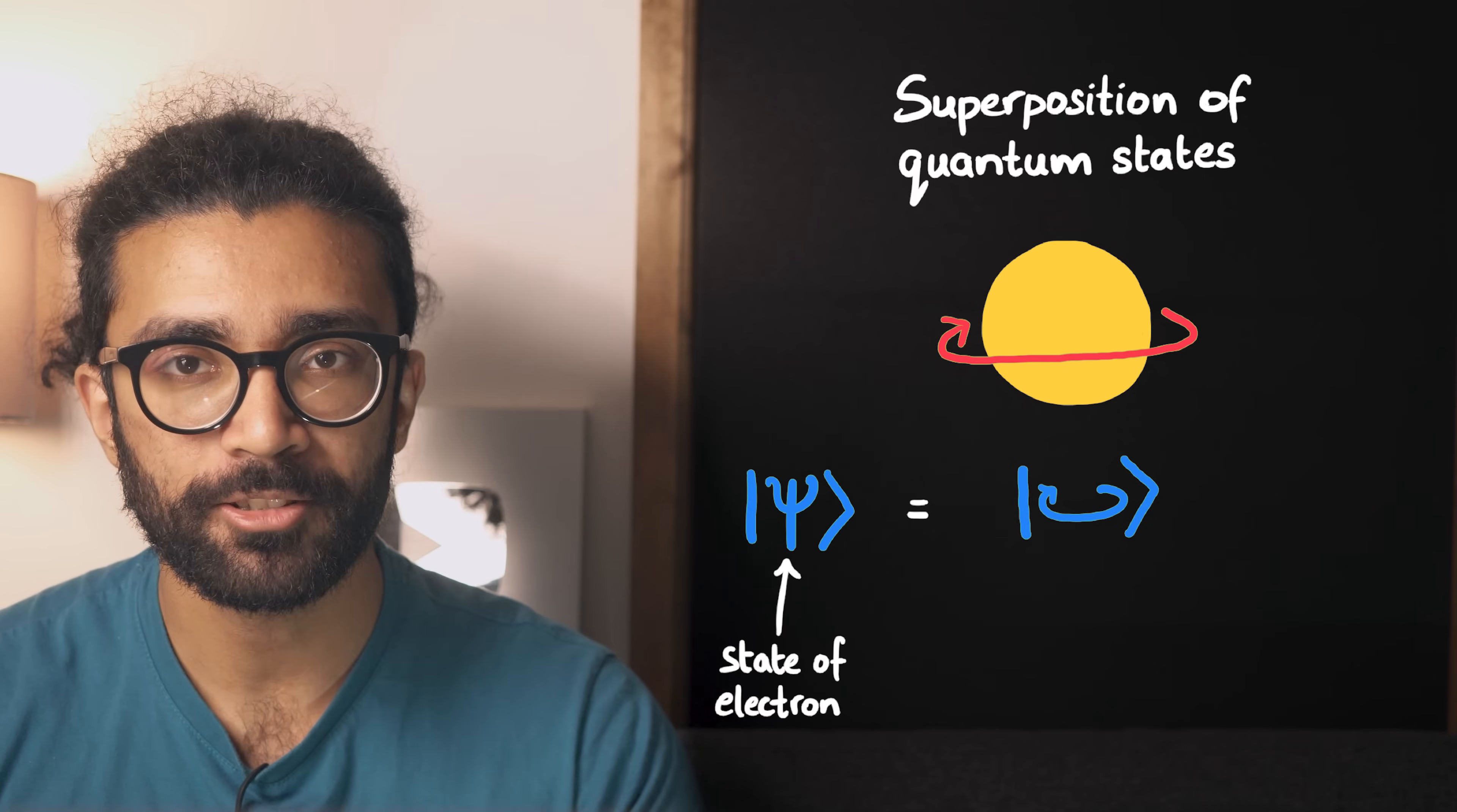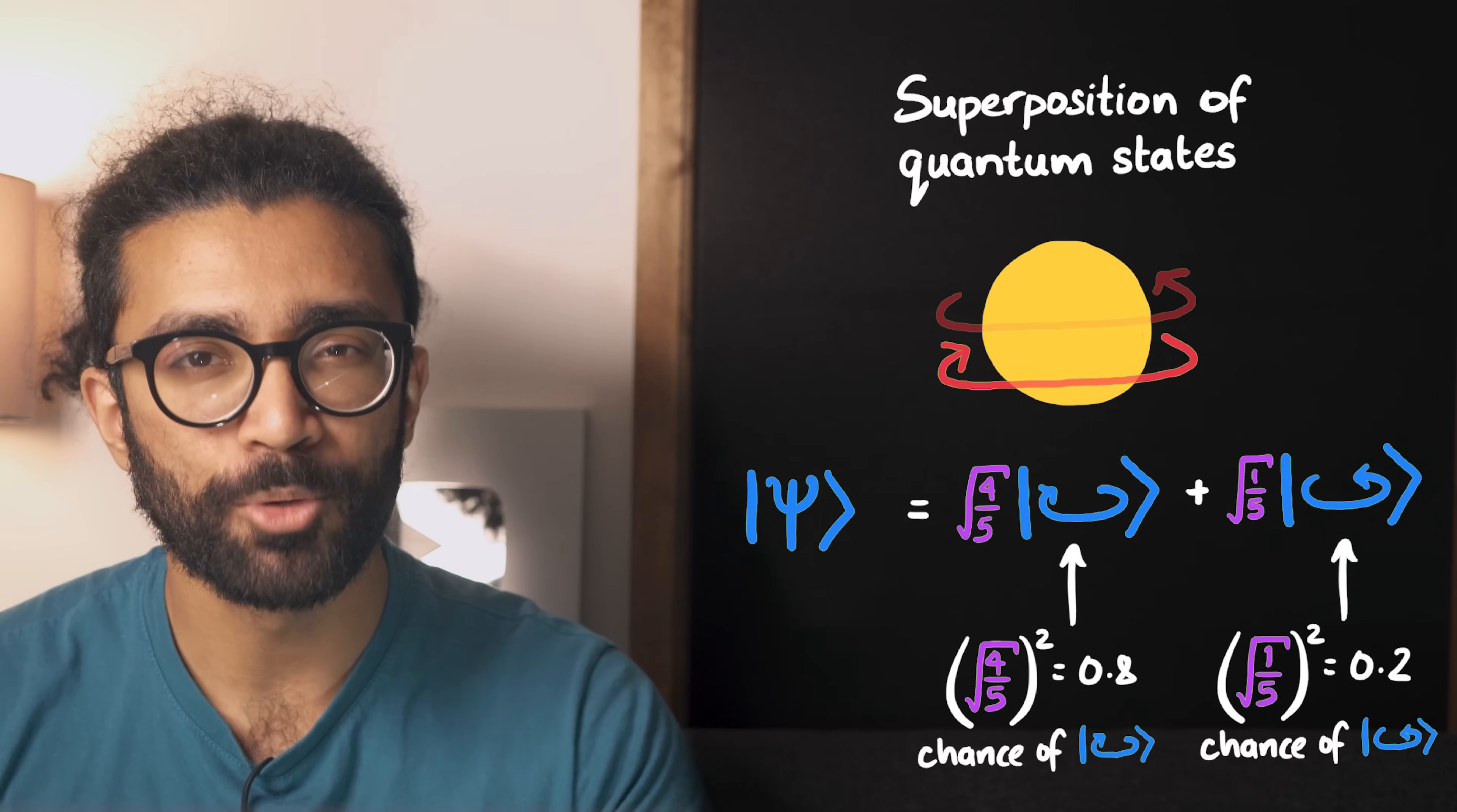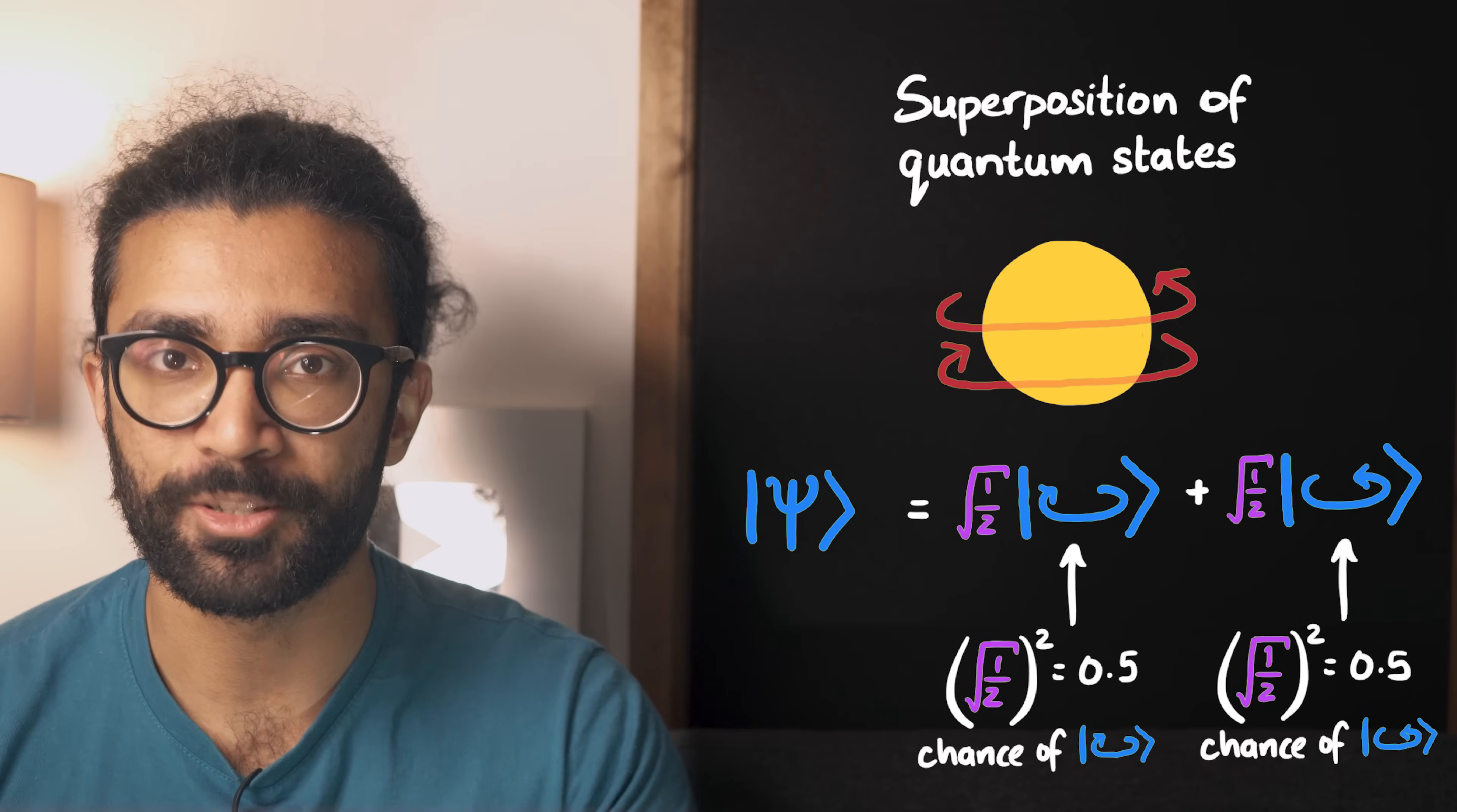And we can even calculate the probability with which our measurement will result in one state versus the other. The probability of getting a particular result is just the square of this quantity. So for a state like this, we have a high chance of finding it spinning clockwise, but some small chance of finding it spinning anticlockwise. Whereas for a state like this, we have a 50-50 chance of finding it in either spin state.